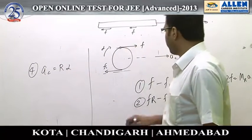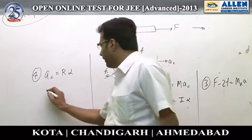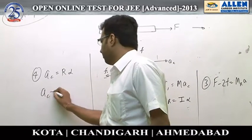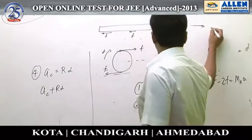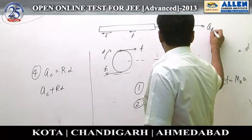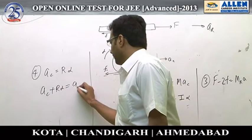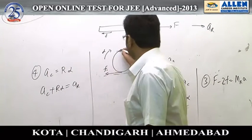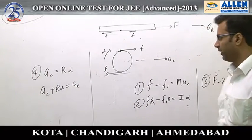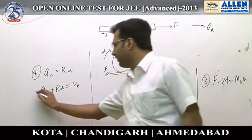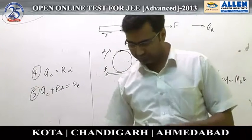For this particular point, it is going ahead with AC plus R alpha. At the same time, let us say the rod was accelerating with AR. These accelerations here and here are supposed to be equal. With these five equations, you can find the various unknowns.